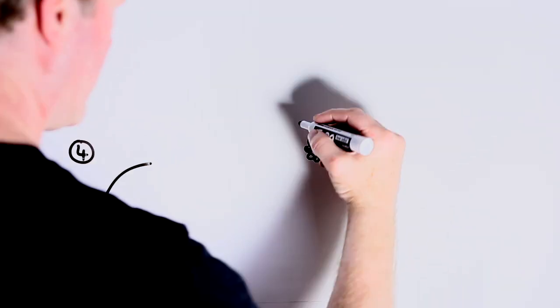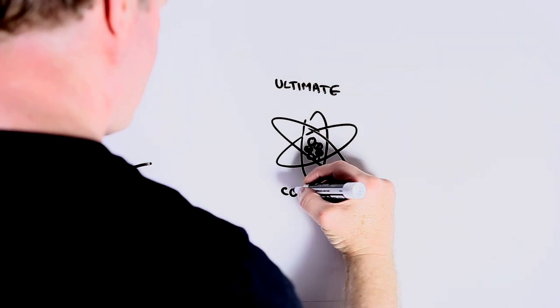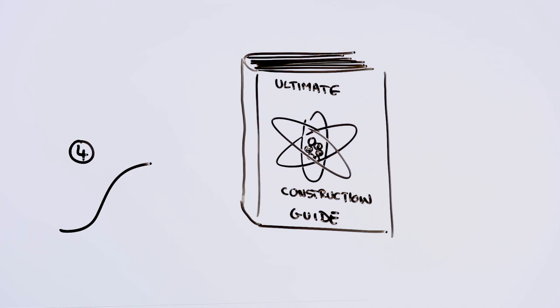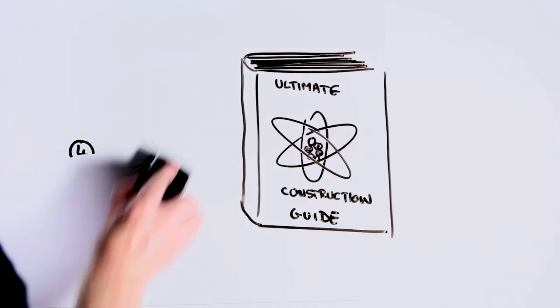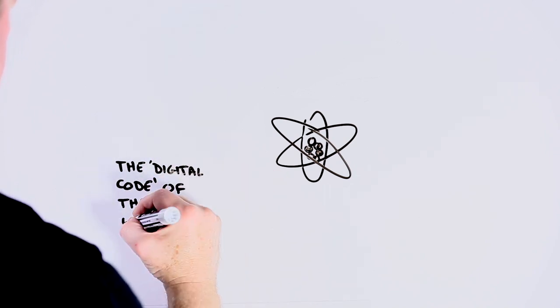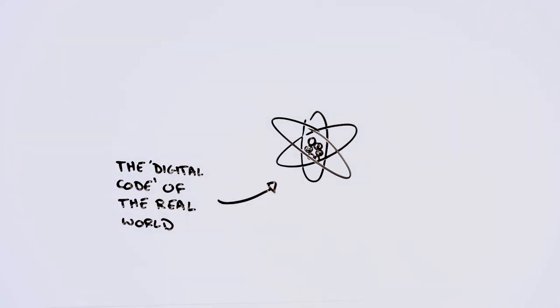What makes this fourth industrial revolution so different is that we're well on the way to developing the ability to design and engineer the world around us using the very atoms and molecules it's made of. If you think of atoms and how they're arranged in materials as the digital code of the real world, we're learning how to hack this code and in the process to change our reality.